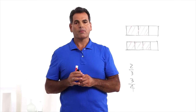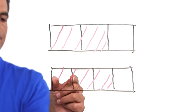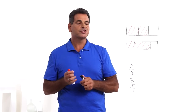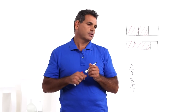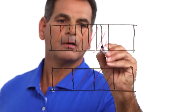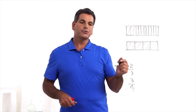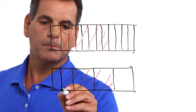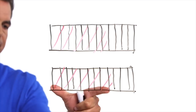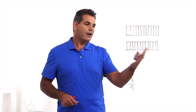A procedure that works really well when working with bar models is called splitting the unit fraction. Each one-third and one-fourth is a unit fraction. We want these two fractions to have the same denominator. So what you can do is split — we're going to split the thirds into fourths, and then split the unit fraction of one-fourth into thirds. We didn't change the size of the fraction; the shaded area stayed the same. But now each bar is divided into unit fractions of one-twelfth, so now you can compare by counting the twelfths.